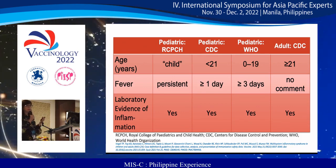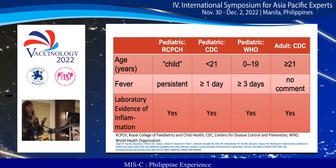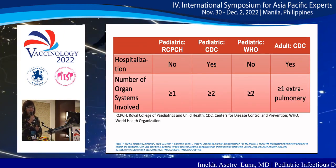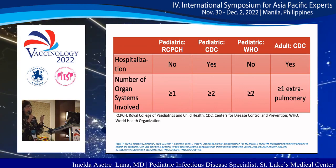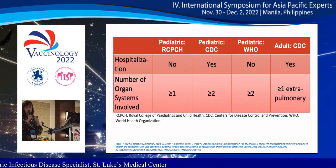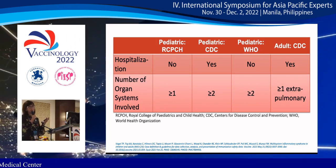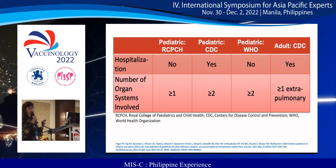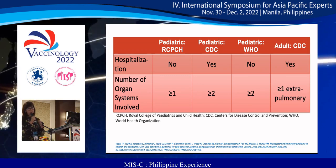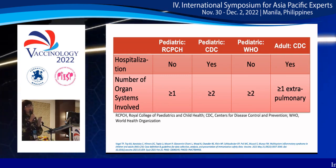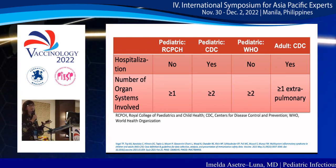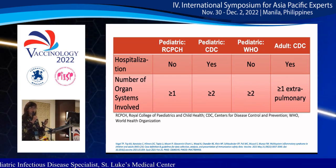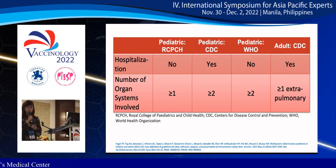All organizations agreed that there should be evidence of inflammation, represented by inflammatory markers such as CRP, ESR, interleukin-6, and ferritin. For hospitalization, the US CDC requires it, while the WHO does not, because some MIS-C cases are mild and can be managed at home with supportive treatment. All agreed on organ involvement, with the CDC and WHO requiring at least two organ systems. For MIS-A, organ involvement should be extrapulmonary.